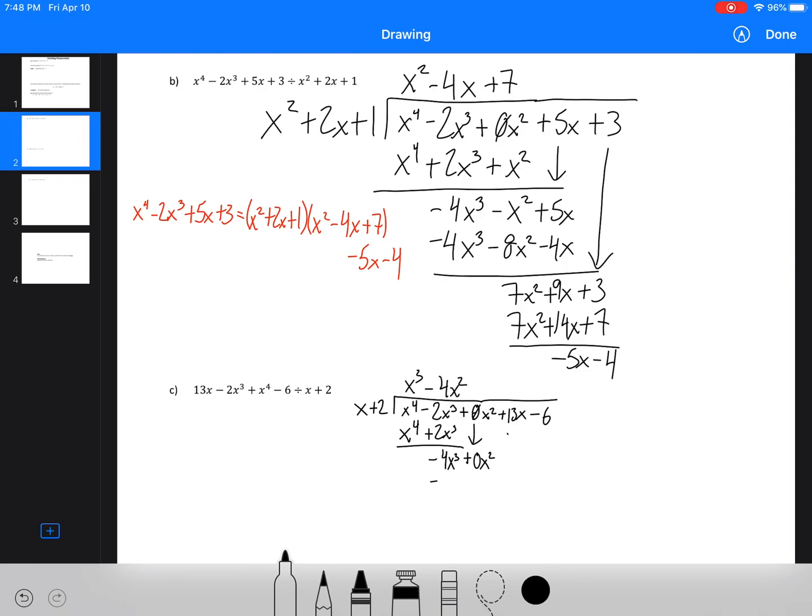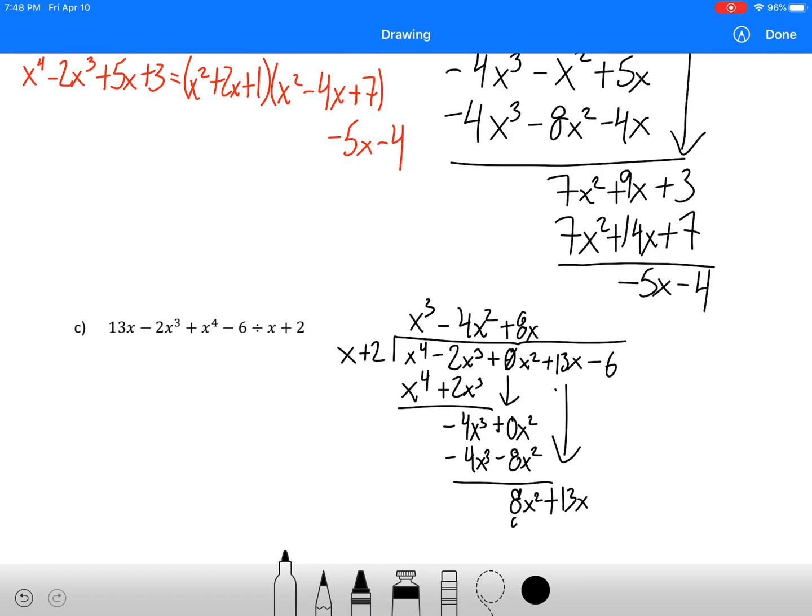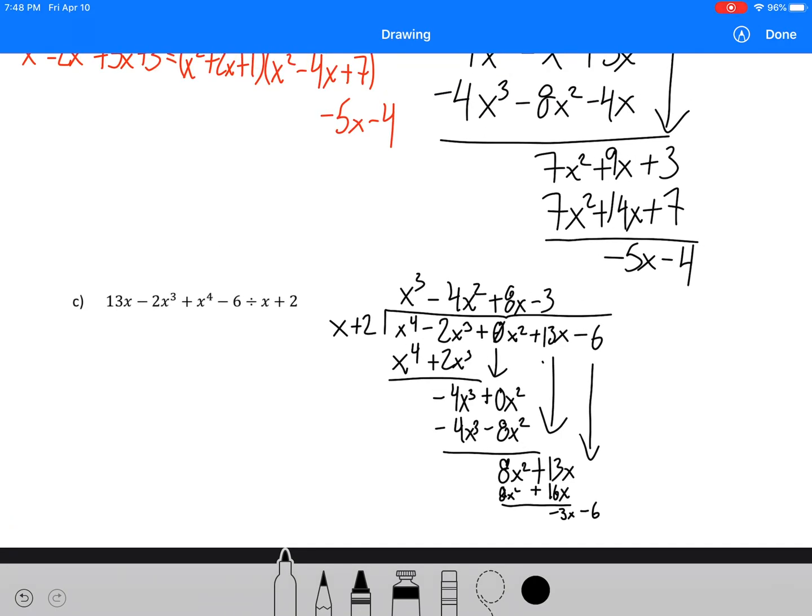We'll go minus 4x². So that's going to be positive 8x² because we're subtracting the negative. We've got 13x. So then that will be plus 8x. It's getting small here. We're going to get 8x² + 16x. So that's negative 3x. Bring down that 6. I'm trying to just fit this in. So minus 3. So we get negative 3x - 6, and that equals 0.